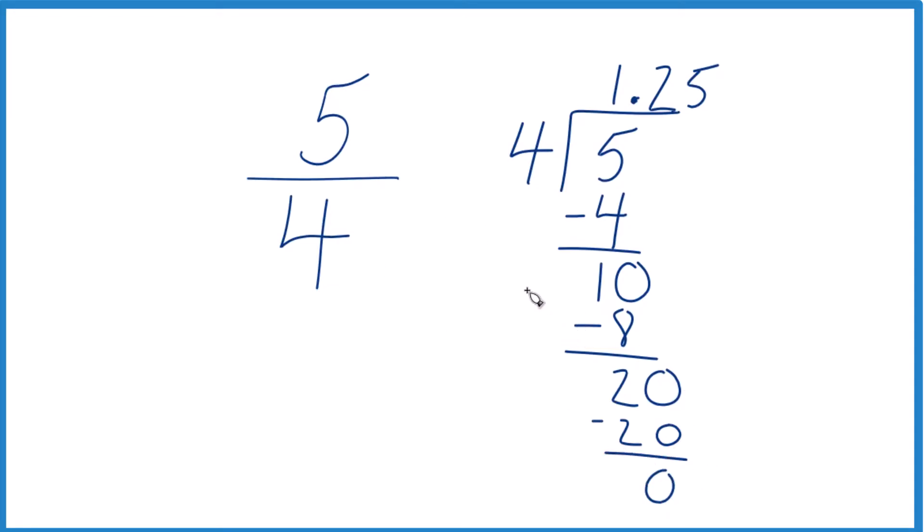So in answer to our question, the fraction 5 fourths as a decimal is 1.25. And these are the same thing. We've just written them in different notations.